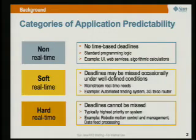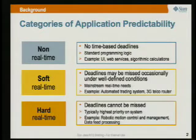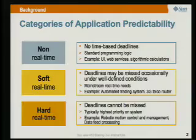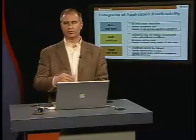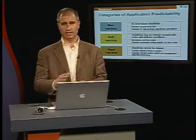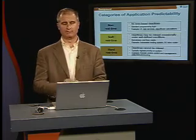Soft real-time, on the other hand, is a category of software that has actual deadlines, and these deadlines can be missed, but only under well-understood conditions. For example, if a stoplight is a real-time system and it's supposed to turn red after 60 seconds — if an ambulance is passing through, it might not turn red at the right time, but that's okay. We all understand what's going to happen there.